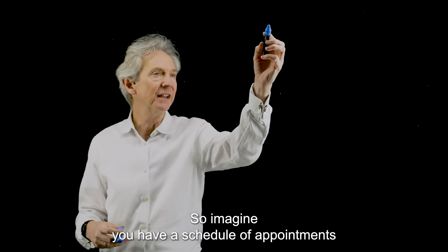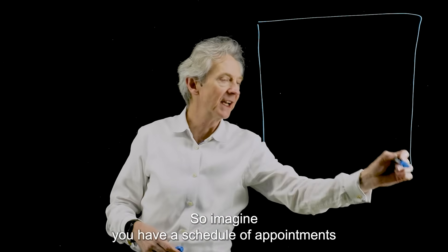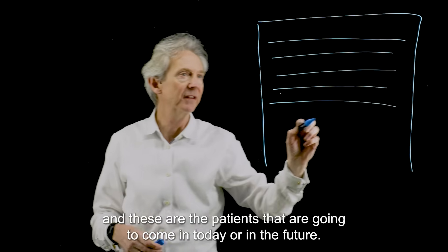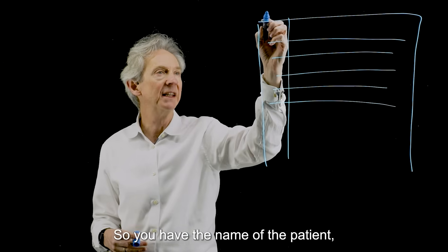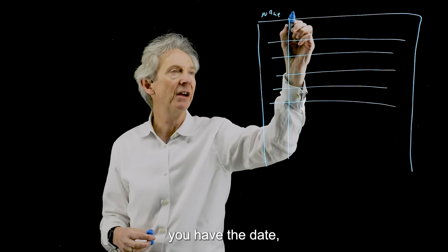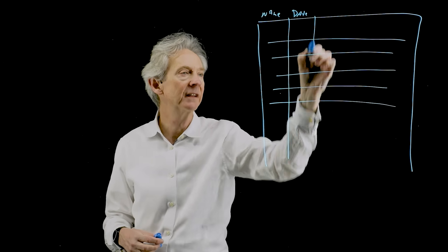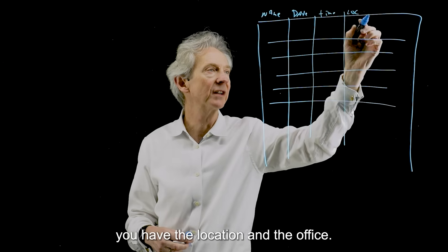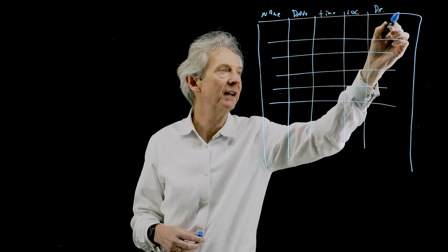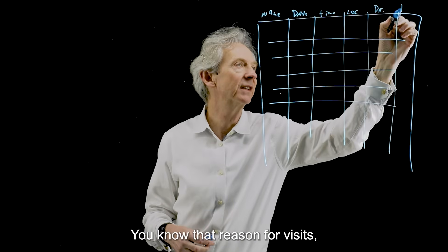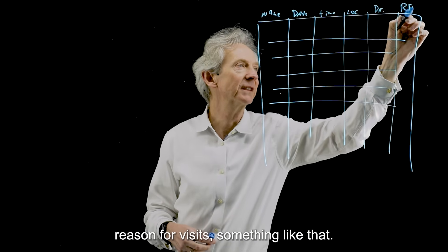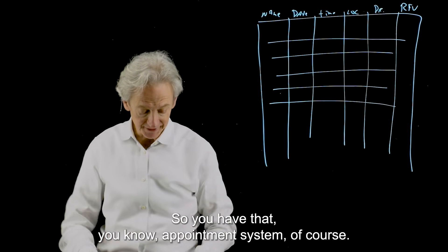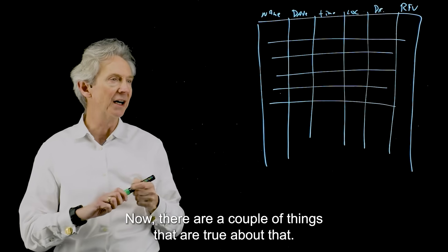So imagine you have a schedule of appointments and these are the patients that are going to come in today or in the future. So you have the name of the patient, you have the date, you have the time, you have the location of the office, you have the doctor, you know the reason for visit. So you have that appointment system, of course. Now there are a couple things that are true about that.